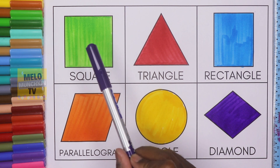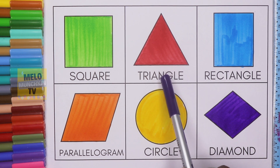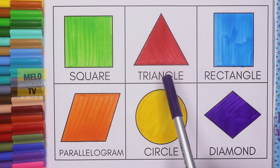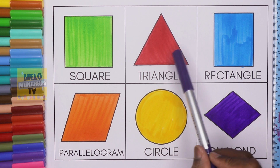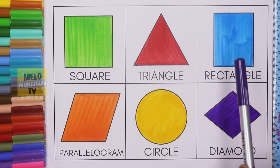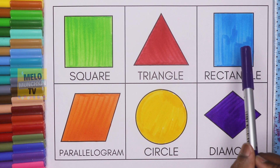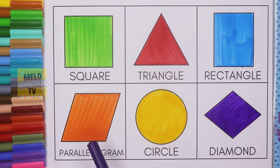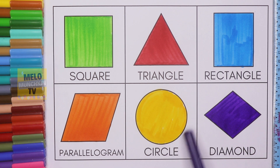This is triangle — triangle has three sides and the color inside is red. Rectangle — rectangle has four sides and the color inside is blue. Parallelogram and the color inside is orange.